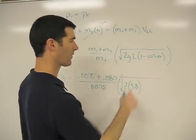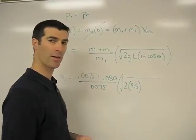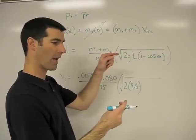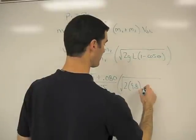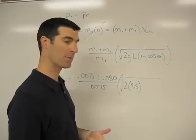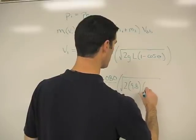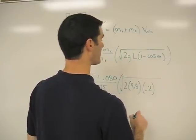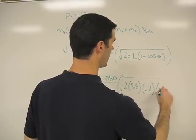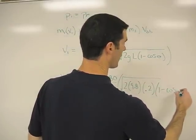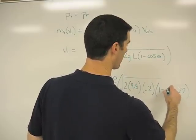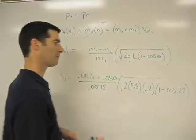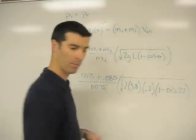2 times 9.8, that's what we use for gravity. The L is the length of the pendulum, and that was where the angle was measured at the top corner of the pendulum, so basically the length of the strings, which were 20 centimeters or 0.2 meters. And then that's going to be times 1 minus cosine of, on average, we had 22 degrees.